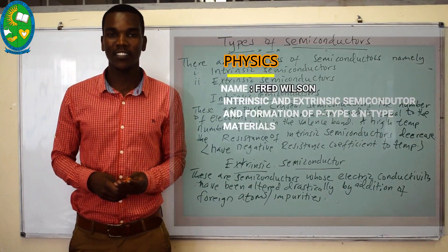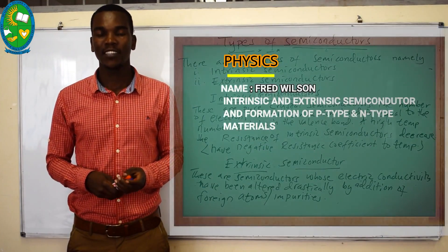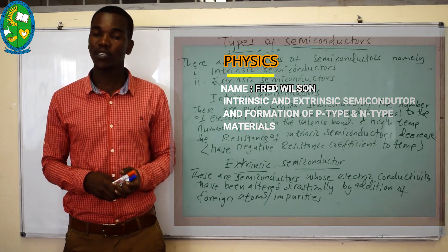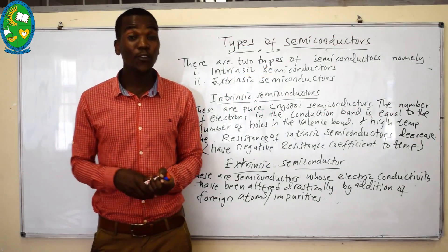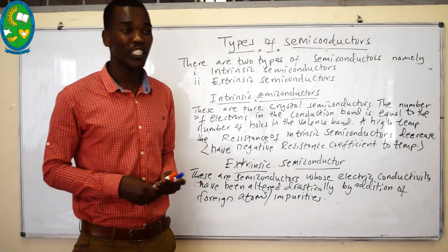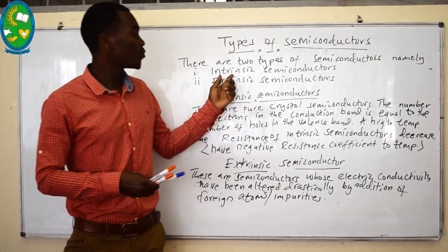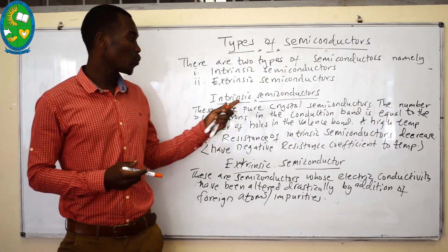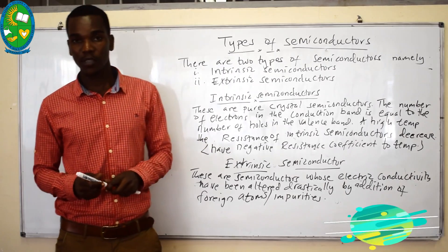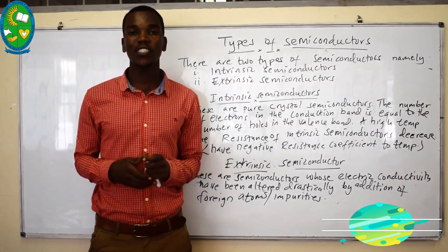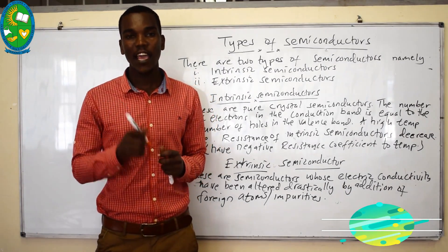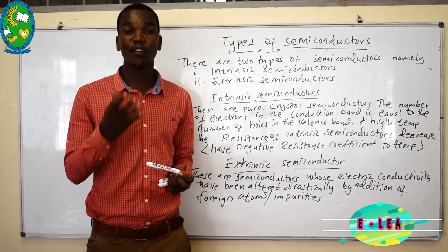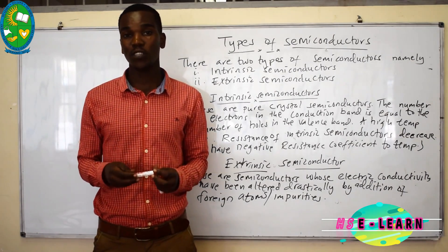Welcome back to the physics lesson. Today we are going to proceed with our discussion on semiconductors. There are two types of semiconductor: intrinsic semiconductors and extrinsic semiconductors. Starting with intrinsic semiconductors — these are the type of semiconductors which are pure, the pure crystal semiconductors.